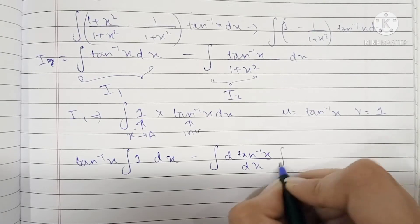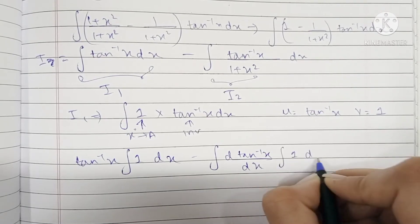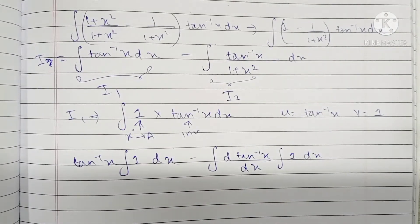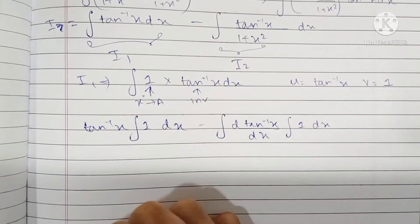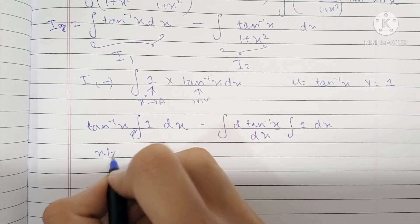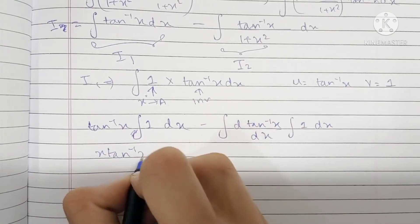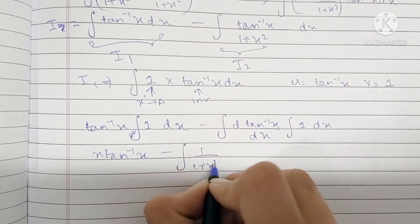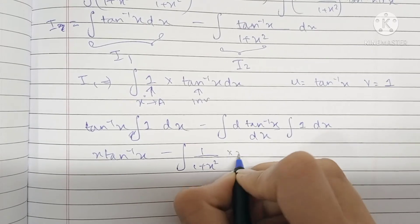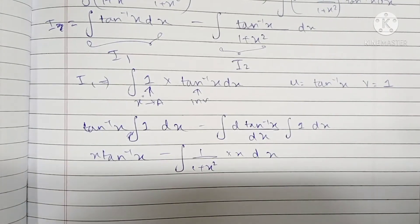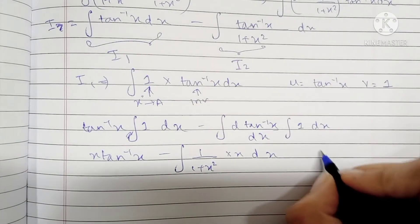So this becomes x · tan⁻¹(x) − ∫(1/(1 + x²)) · x dx.